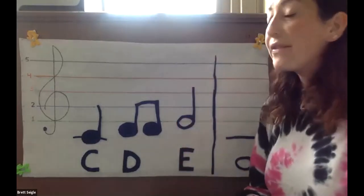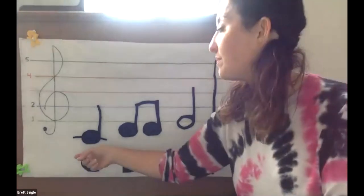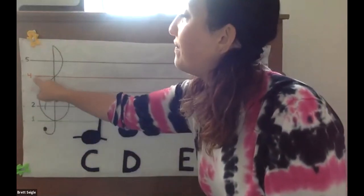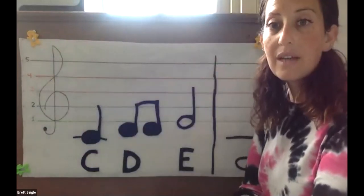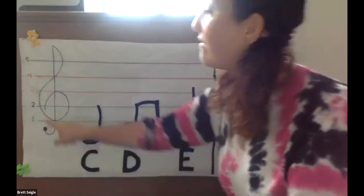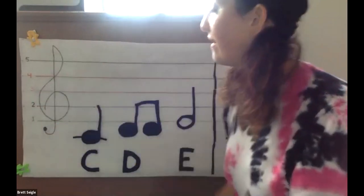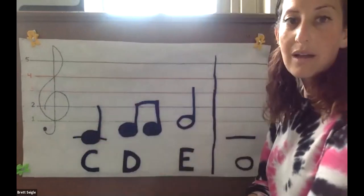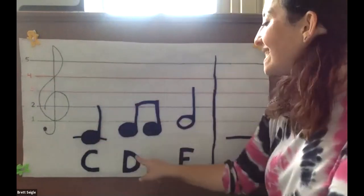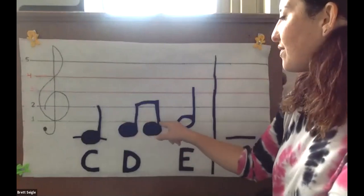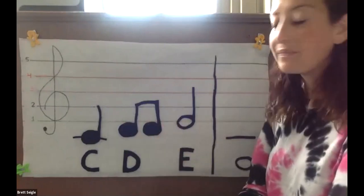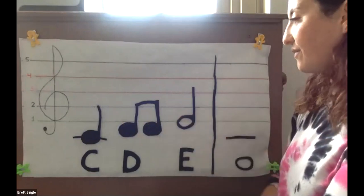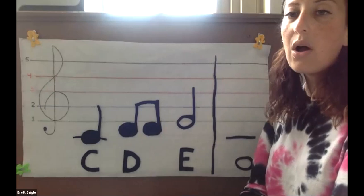So our first note is middle C. Middle C has its own special line. It's not on one of the five lines that treble clef lives on, right? Treble clef lives on five lines. One, two, three, four, five. Middle C is not on one of these lines. It needs its own special line. D is underneath the first line. And E is on the first line of treble clef's home.